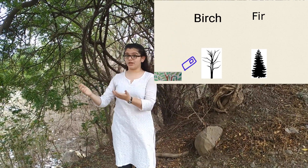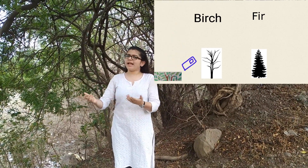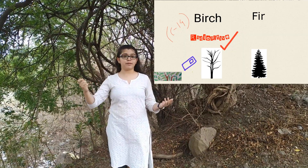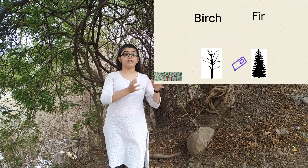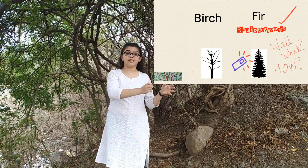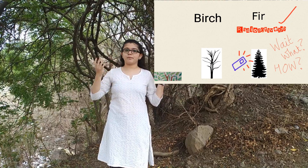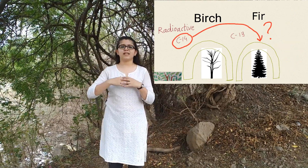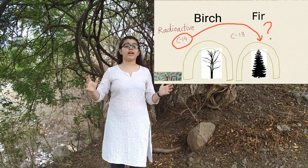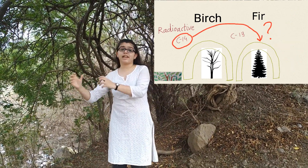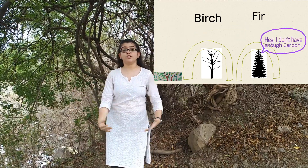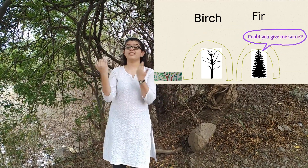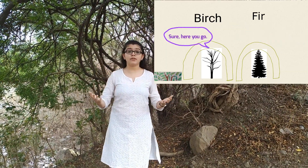She ran it over the birch leaves, and like we'd expect, it beeped. When she ran it over the fir needles, it beeped again. Which means that in some way, the birch had sent its radioactive carbon to the fir — which means that these two were communicating.